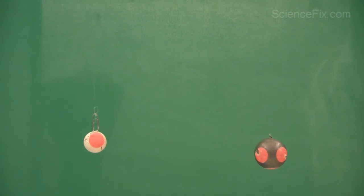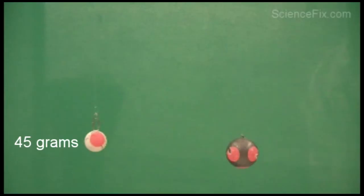On the left is a golf ball, and on the right is the lead fishing weight. The mass of the golf ball is 45 grams, and the mass of the lead fishing weight is 2,800 grams. They are hanging from the ceiling by fishing wire.